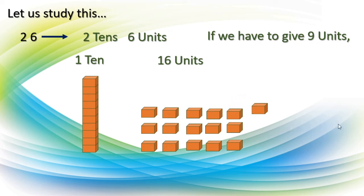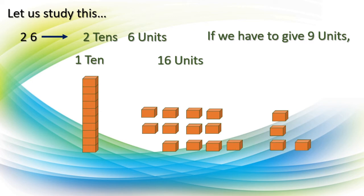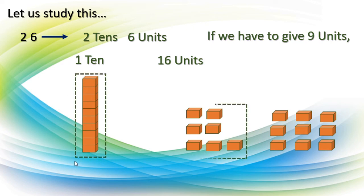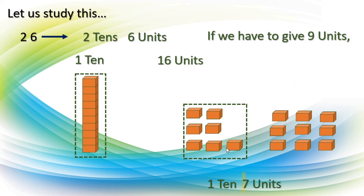Counting out 9: 1, 2, 3, 4, 5, 6, 7, 8, and 9. We gave 9 units. Now what remained? 1 ten remained, and 7 units remained: 1, 2, 3, 4, 5, 6, 7. So 1 ten and 7 units remained. When we subtract 9 from 26, we get 17.